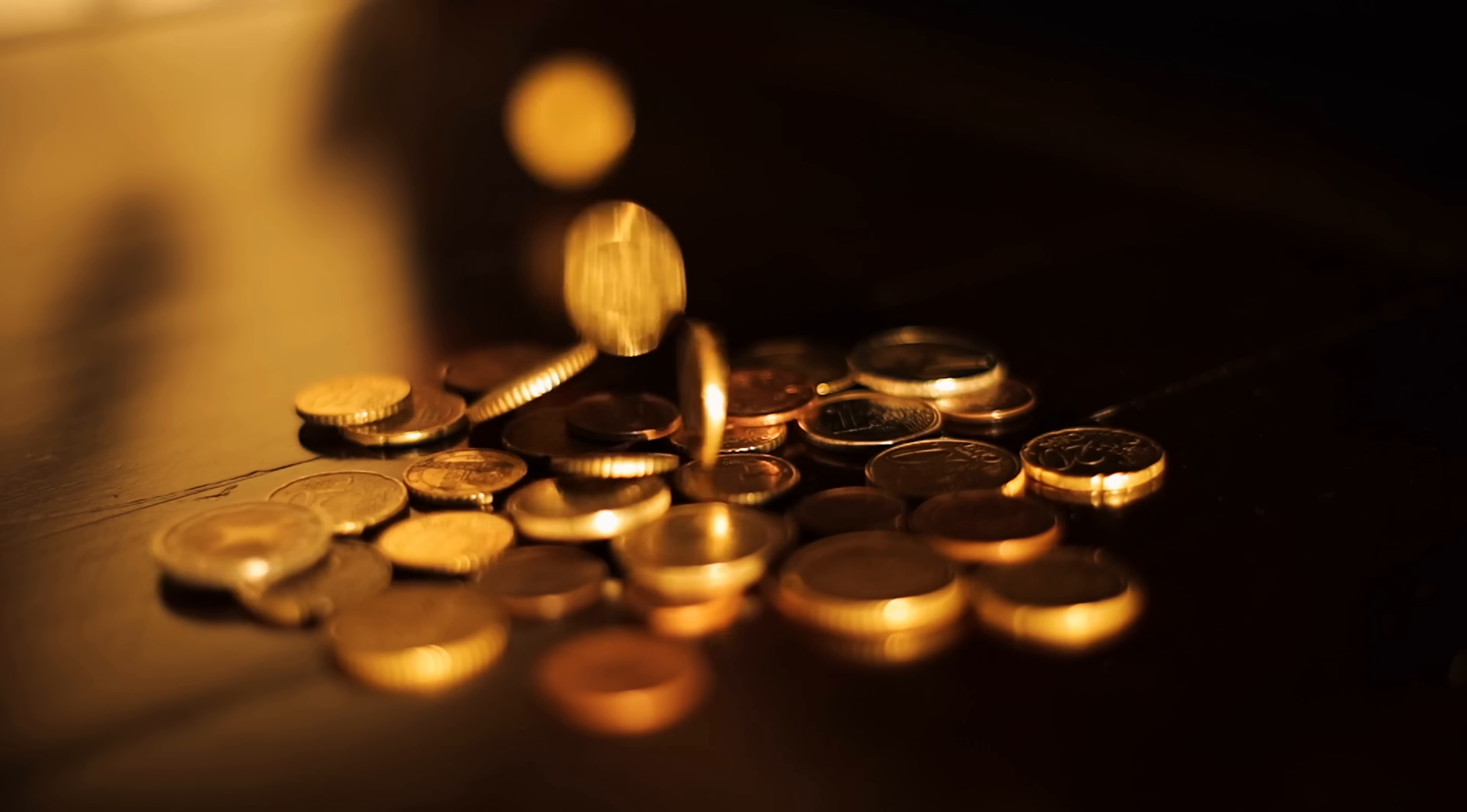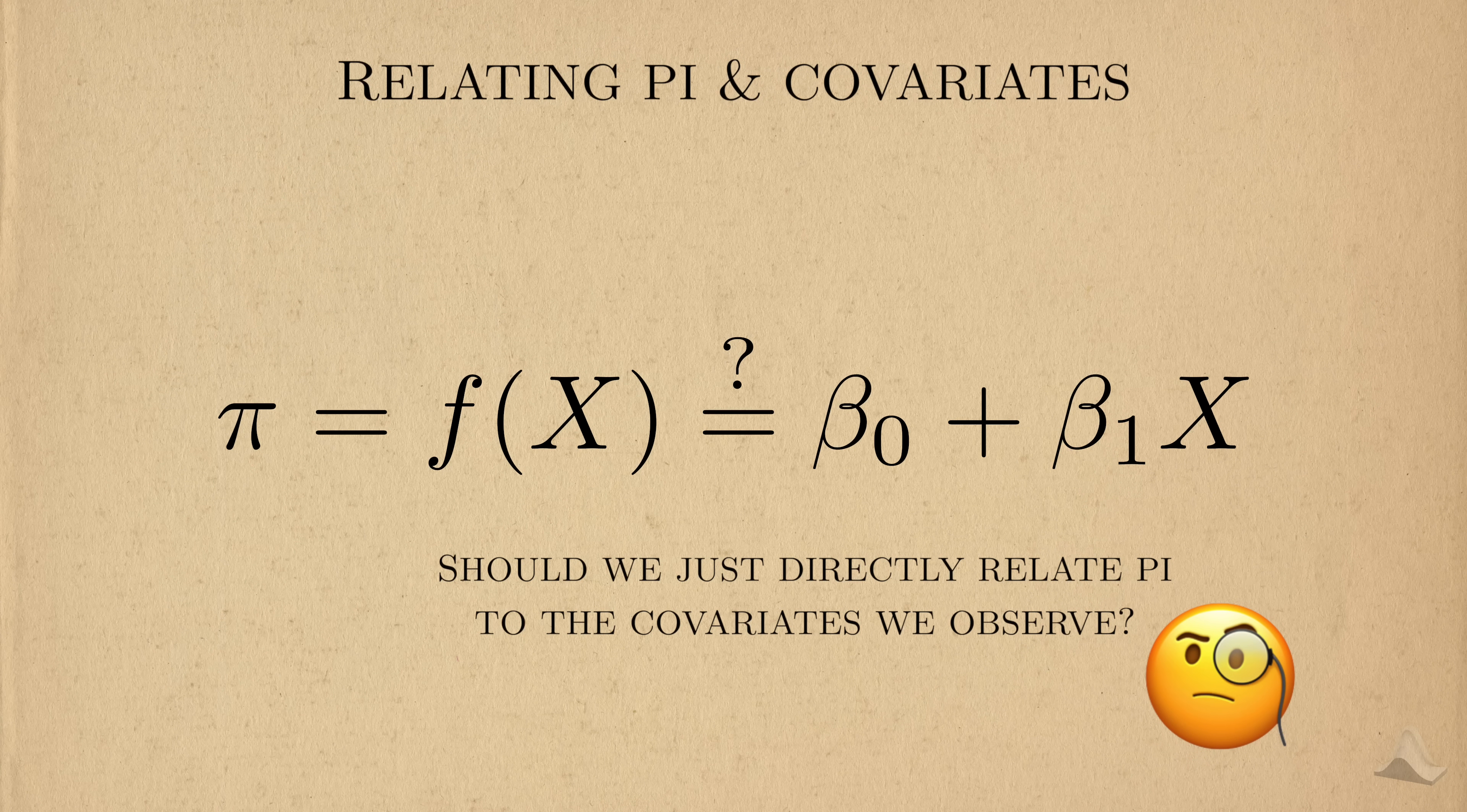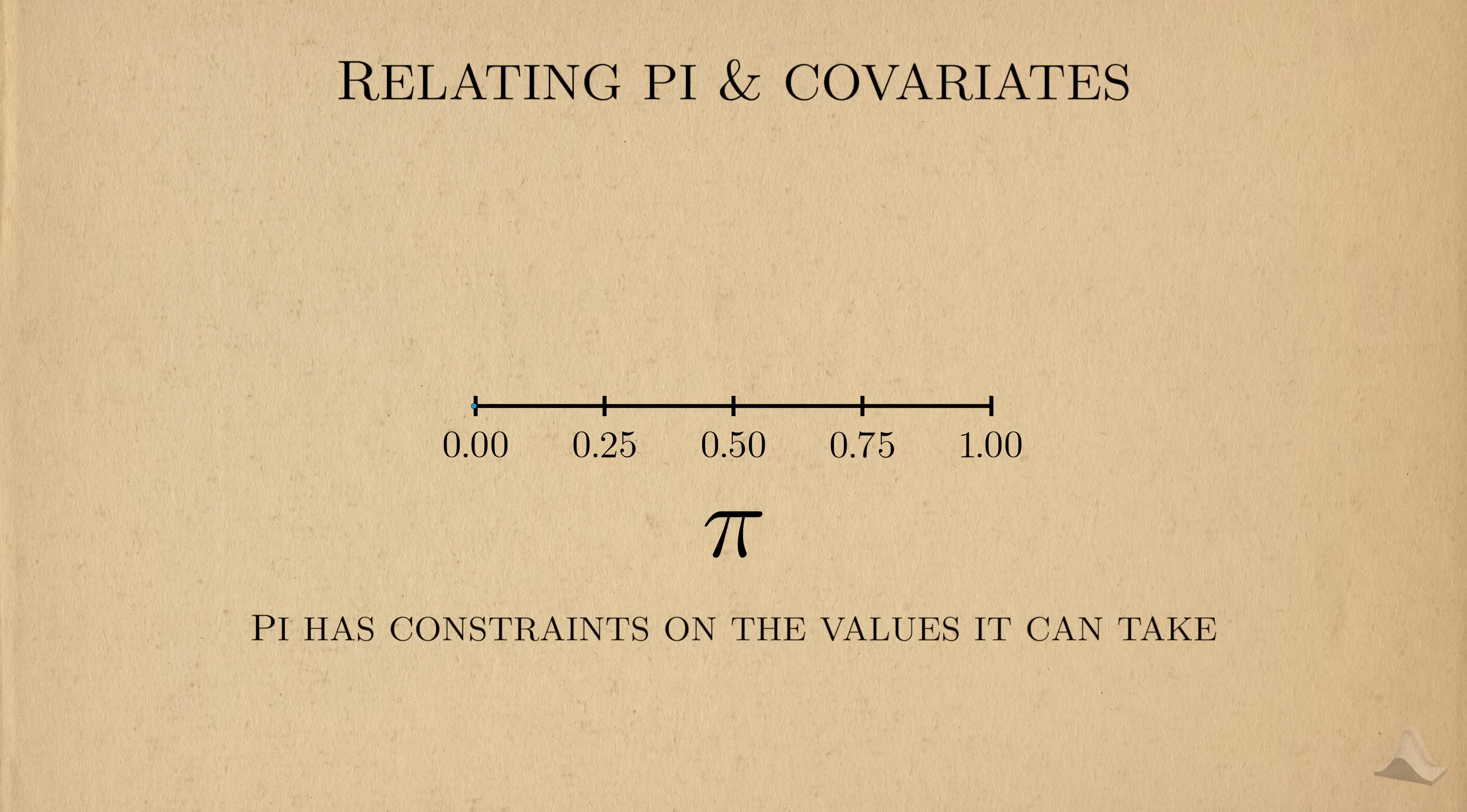A coin is the quintessential Bernoulli random variable, where a fair coin means that pi equals 50%. Since we're considering relationships between variables, you might be tempted to think that we examine how covariates influence this parameter pi directly, but that would be wrong. Since pi represents the probability that an event will happen, it has constraints on the values it can take. Probabilities can only be between 0 and 1, so those are our limits on pi.